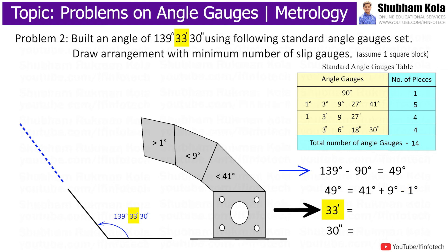Now to build 33 minutes, first I will add 27 minutes and 9 minutes angle gauges, which is more than 33 minutes, so I will subtract 3 minutes angle gauge.